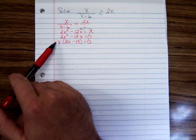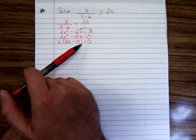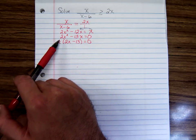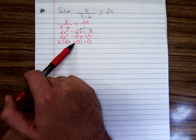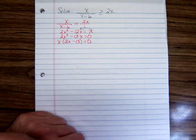And you can just check this by distributing the x to see you have 2x times x. That's 2x squared minus 13x. So yeah, we factored it correctly.